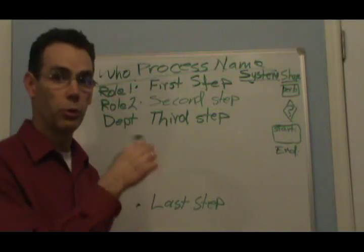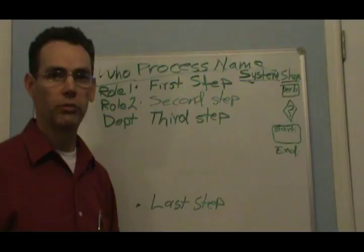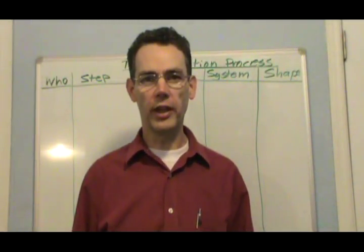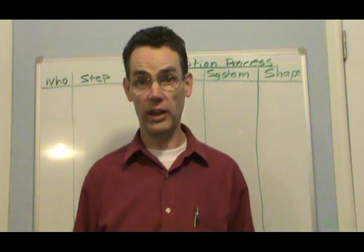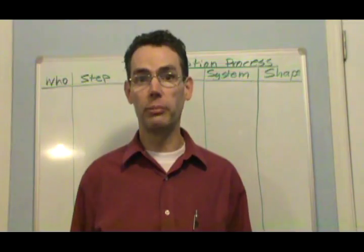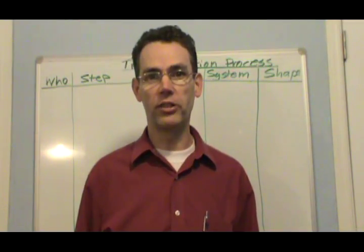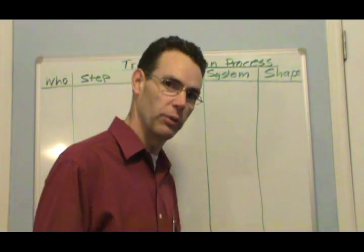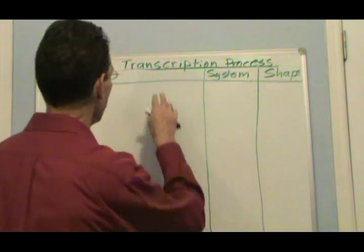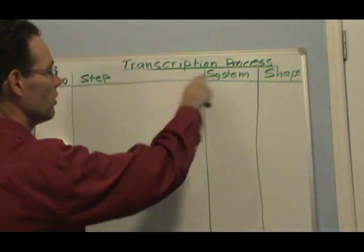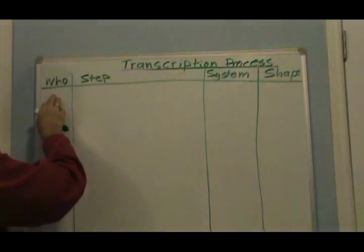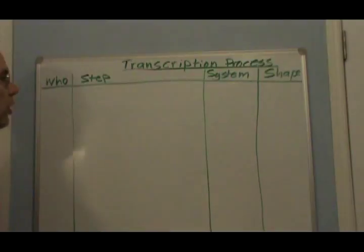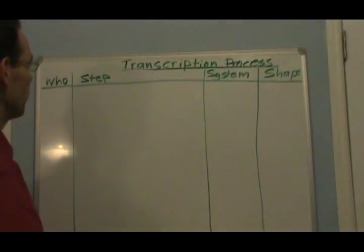So the next step is we'll go through an example here, and hopefully that'll help. I've been doing some work recently with surgery, and we had some questions on the transcription process — how that worked, turnaround times, and all that. So I went and did some mapping. I'm just going to use that for an example. It's a pretty simple one with only two roles, so it'll be a very simple swim lane diagram. I've set myself up a little grid here — transcription process. I've got who's going to do it, my step, the system name, and the shape.